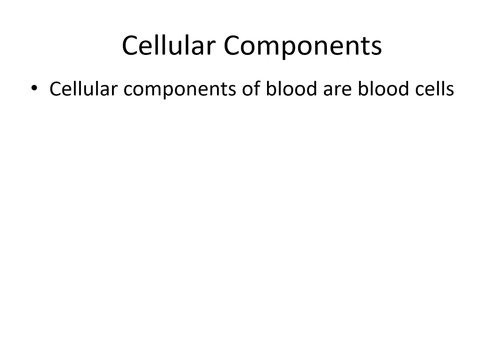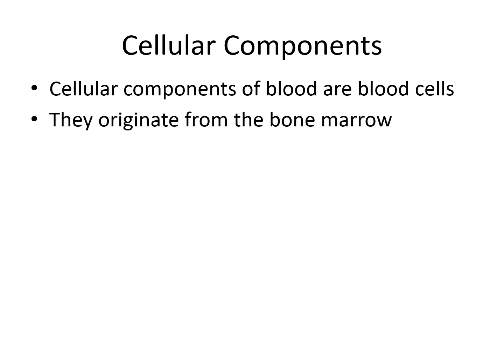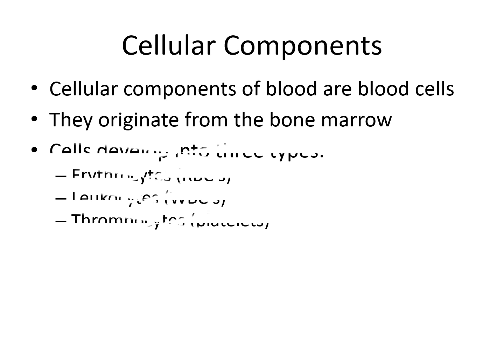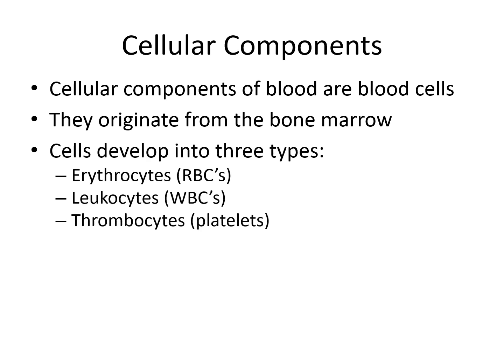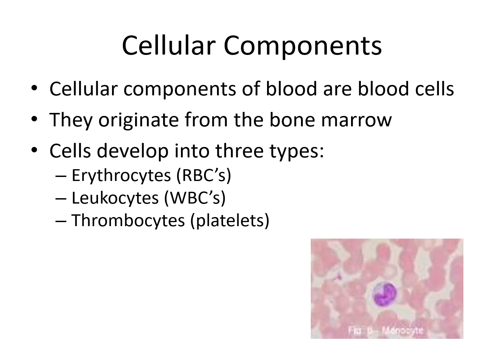Let's talk about the cellular components of blood. Cellular components of blood are blood cells, and they originate from the bone marrow. Cells develop into three types: erythrocytes, known as red blood cells or RBCs; leukocytes, known as white blood cells or WBCs; and thrombocytes, also known as platelets.